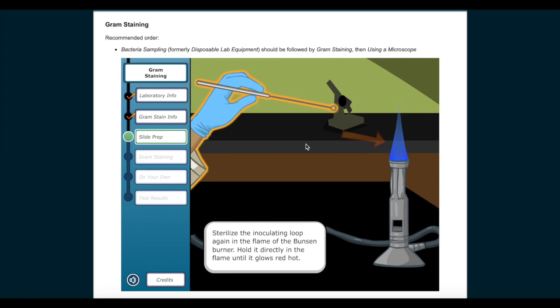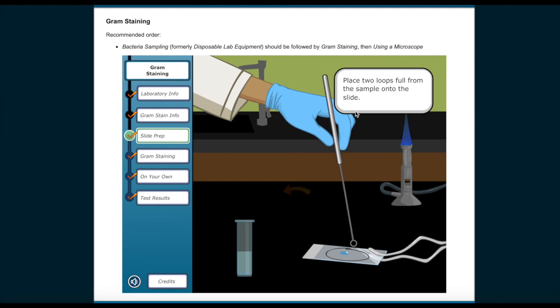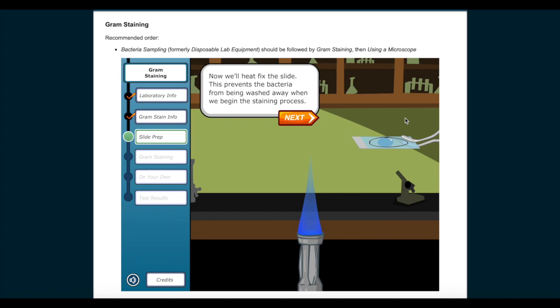Use the inoculation loop to transfer a small amount of sample from the test tube to your prepared slide. Sterilize the inoculating loop again in the flame of the Bunsen burner. Hold it directly in the flame until it glows red hot. Transfer a small amount of sample from the test tube to our prepared slide. Place two loops full from the sample onto the slide. Tilt the slide to spread the drop out slightly, about the size of a penny.